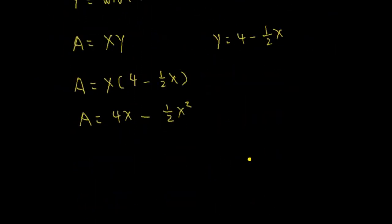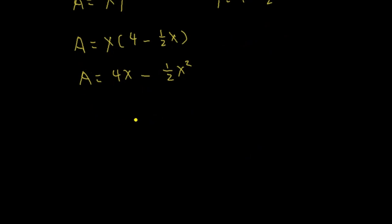Now we will take the derivative of the area with respect to x, so that we can find what value of length gives the maximum area. Taking dA over dx, the derivative of 4x is 4, and using the power rule on one-half x squared — bring the power to the front and subtract 1 from the power — we get dA/dx equals 4 minus x.